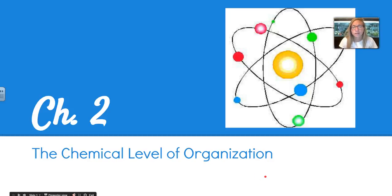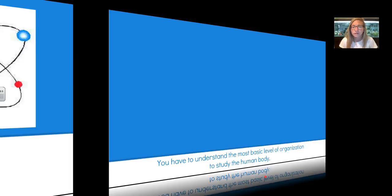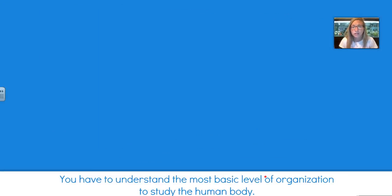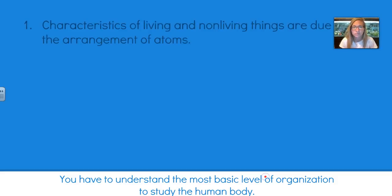Hey guys, Carlson here to wrap up Unit 1 Notes with you by going over Chapter 2, the Chemical Level of Organization. A lot of these topics should be review for you, so if they're not, go back and look over Chapter 2 a little more thoroughly.